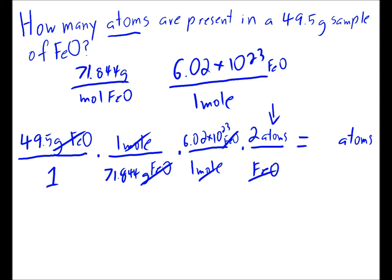So let's multiply the top of all of our fractions together and the bottom, and we'll divide our answer. Alright, so 49.5 times 6.02 times 10 to the 23rd power times 2 equals 5.9598 times 10 to the 25th power—a very, very large number, even larger than this.